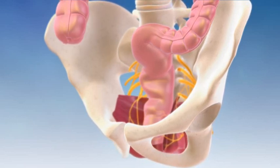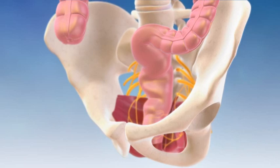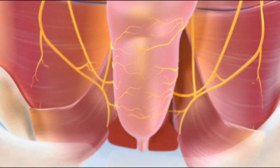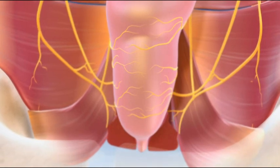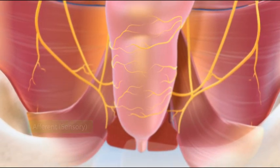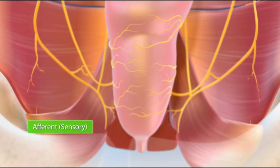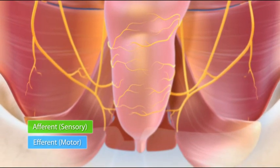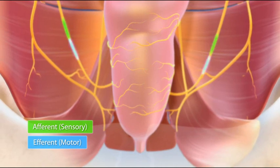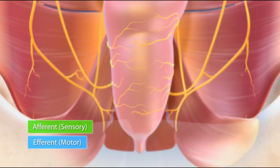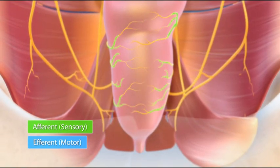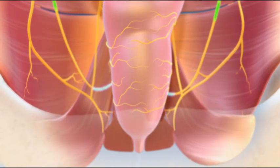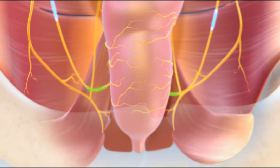Fecal continence also depends on peripheral and central innervation. The sacral nerves modulate the evacuation reflex, both through inhibition and stimulation. These nerves transmit information via afferent, or sensory pathways, and efferent, or motor pathways. These complex neuroreflex mechanisms rely on sensations, coupled with involuntary, or autonomic, and voluntary, or somatic activity.